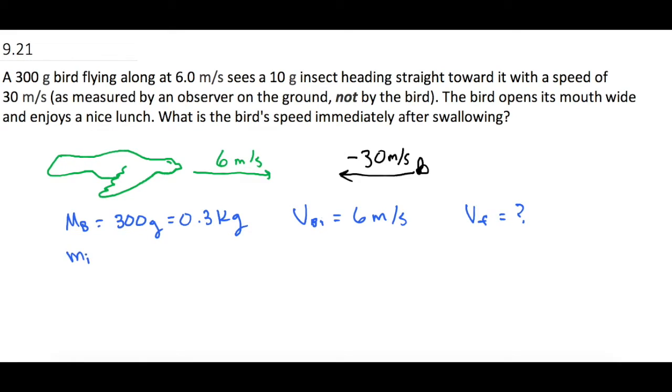Now we have the mass of the insect which is 10 grams or 0.01 kilograms. The initial velocity of the insect is negative 30 meters per second. And the final velocity of the insect, we don't know that either. Now let's scroll down a little bit and let's think about what's going on.